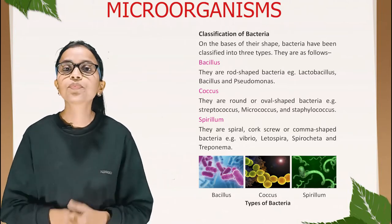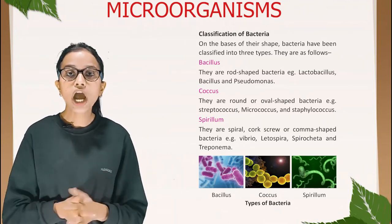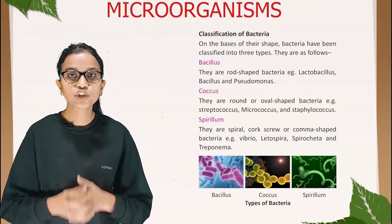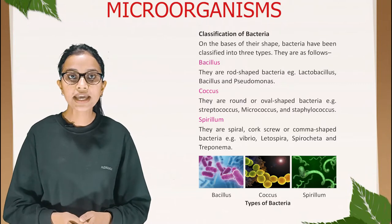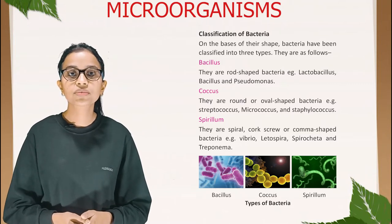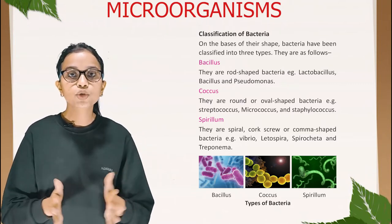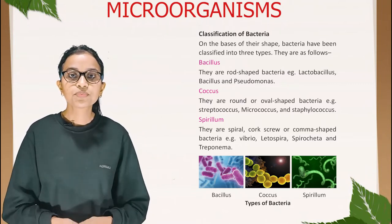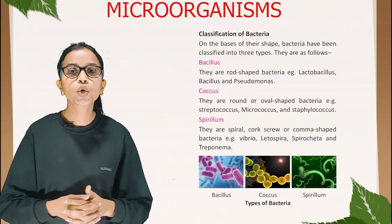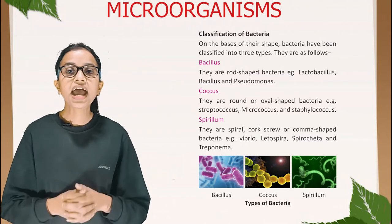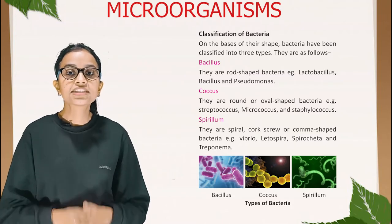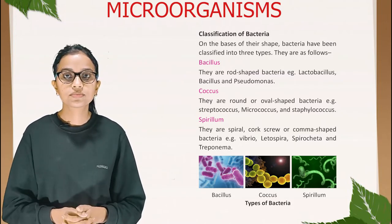Second, Coccus — round or oval-shaped bacteria. Examples: Streptococcus, Micrococcus, and Staphylococcus.